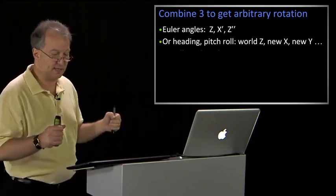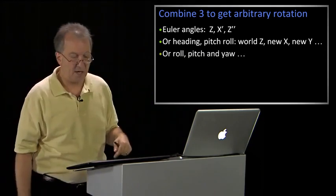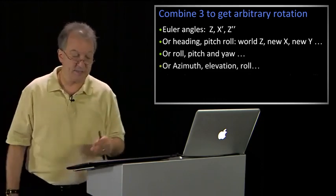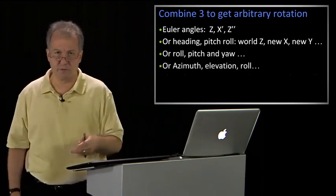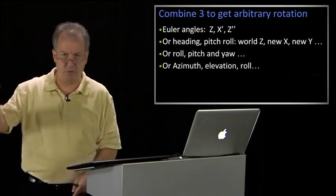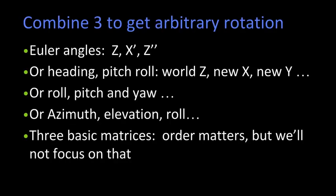So you've got the world z, the new x, the new y. There's roll, pitch, and yaw. There's azimuth elevation and roll. Basically, there are these three basic matrices, rotation about the x, y, and z. The order matters.